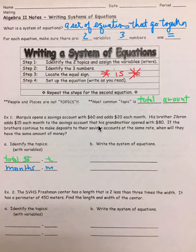So for Marquise, his total amount is equal to, actually, let's match these up. Marquise started with $60, and he adds $20 each month, 20M. Gibran started with $80, but he only adds $15 per month.